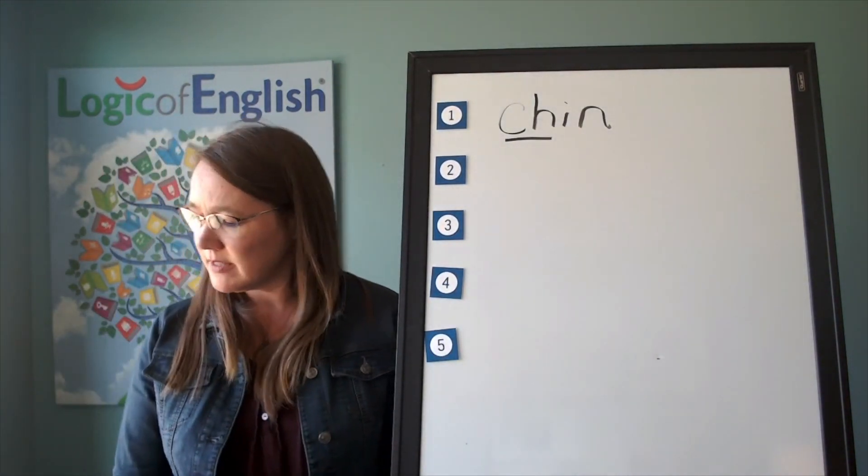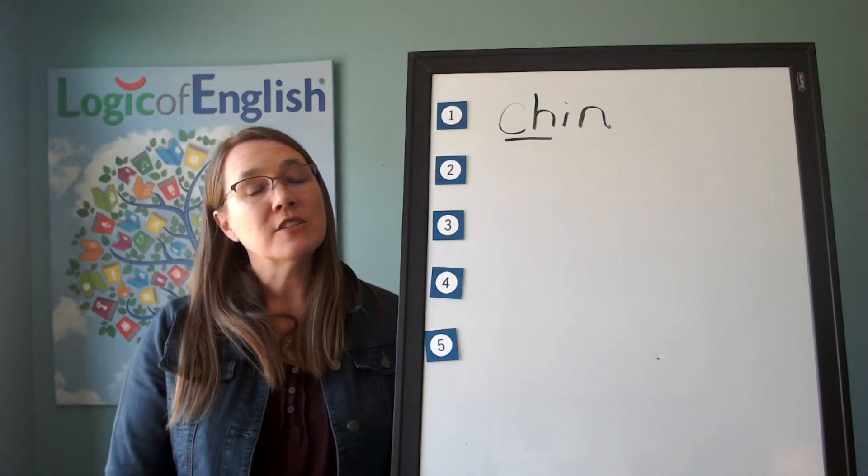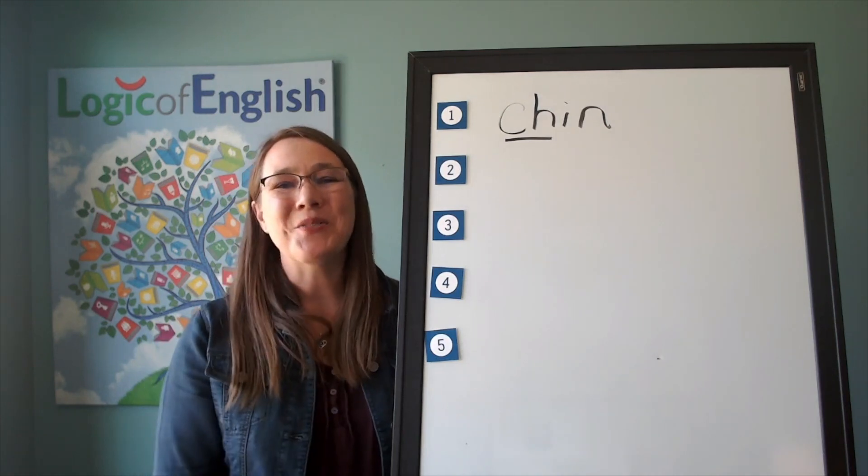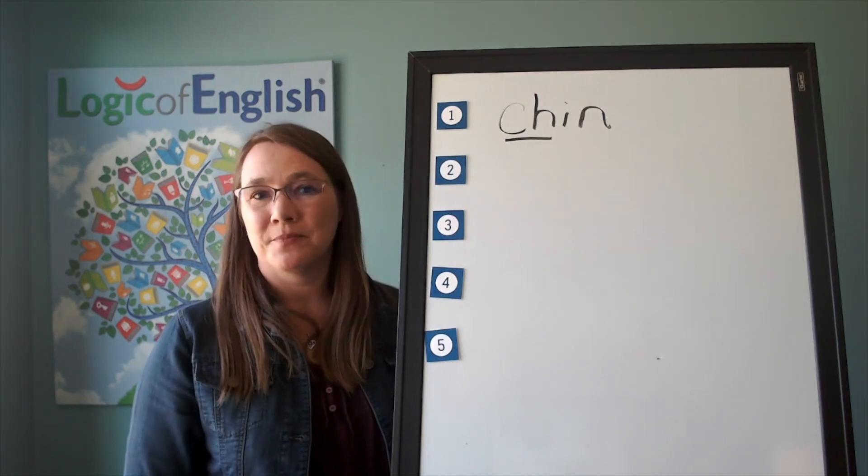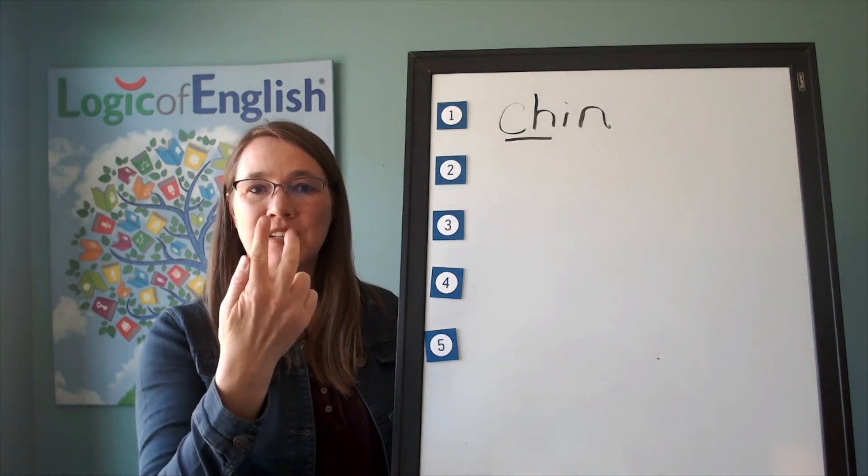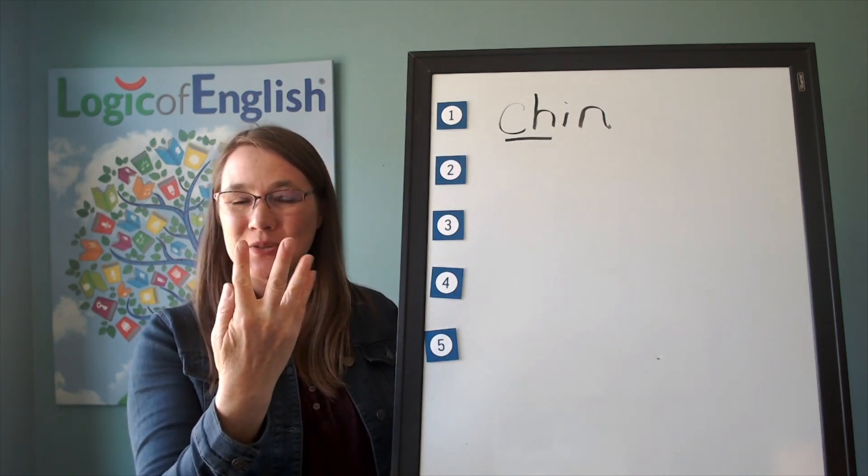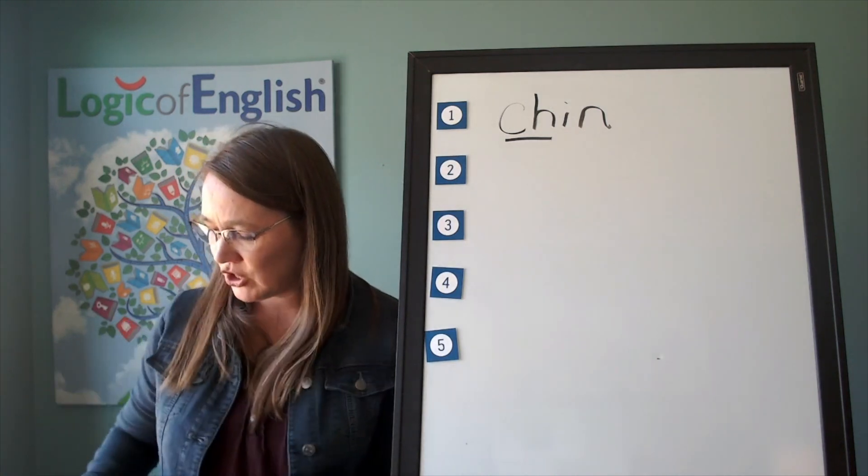The next word is chick. The chicken had a baby chick. Chick. Go ahead and say chick. Let's sound it out. Ch-i-ck. Do you see that? It has a two letter c there. Go ahead and write chick.